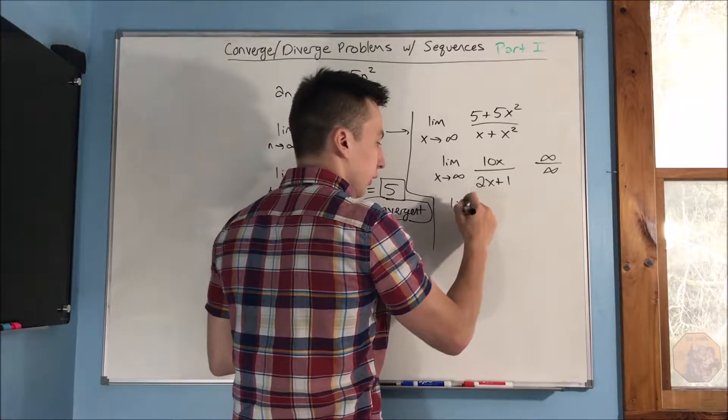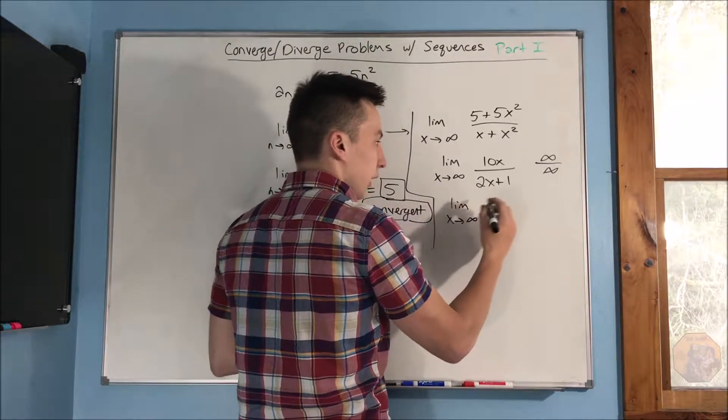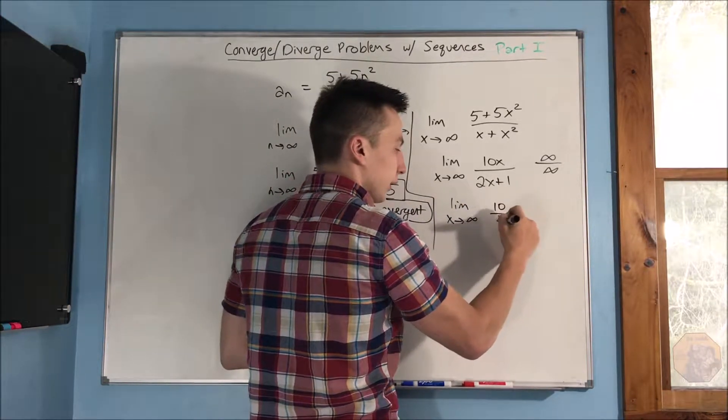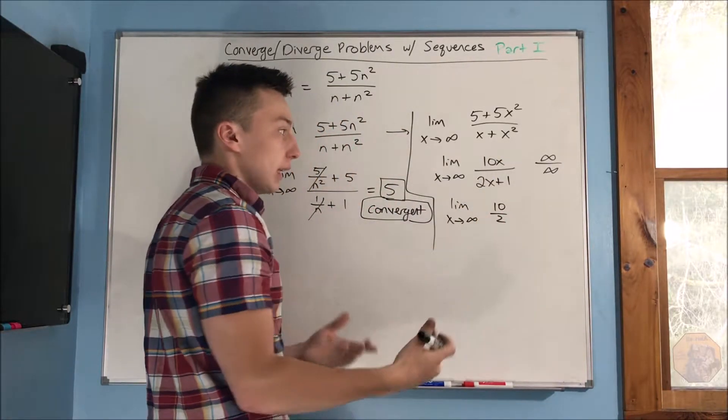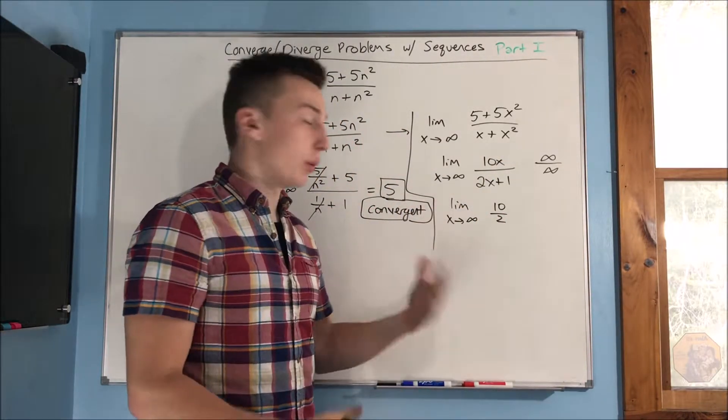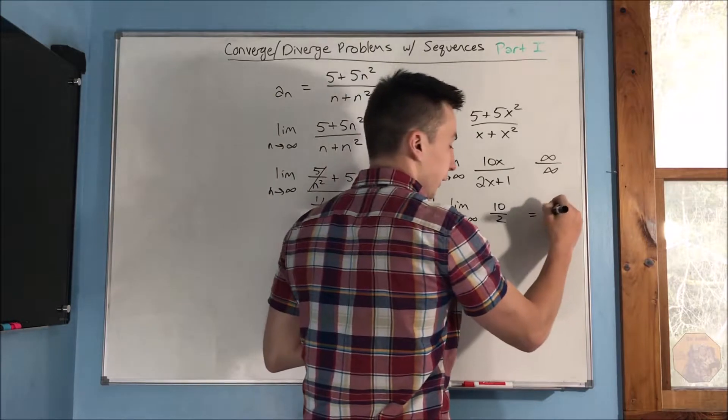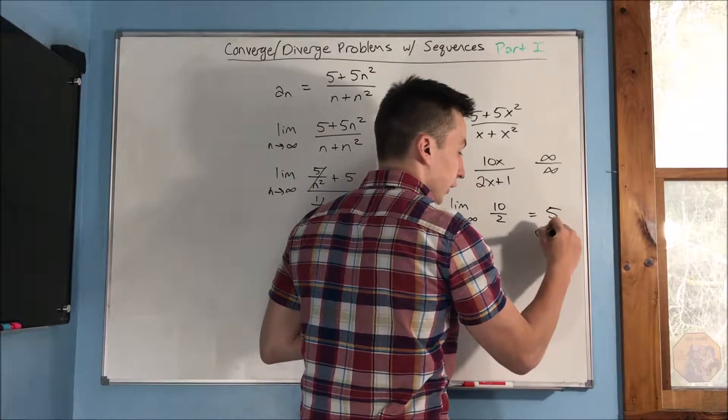So we take another L'Hopital's rule, and we get 10 over 2. The derivative of the top being 10, the derivative of the bottom being 2, and that is just equal to 5, so that's also convergent.